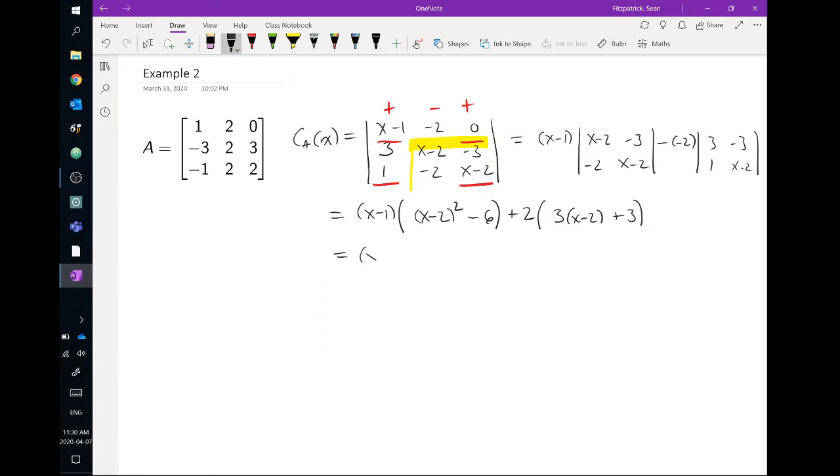Okay, so we start expanding. I'm going to leave that x minus 1 factored out. So x squared minus 4x plus 4 minus 6. I can factor a 3 out, right? 3 is common in this second term. So we'll factor that 3 out. 2 times 3 gives me a 6 out front. And then I have x minus 2 plus 1, okay?